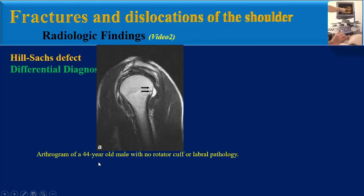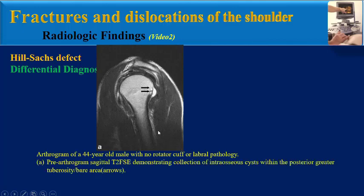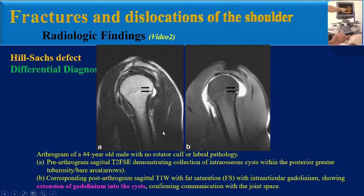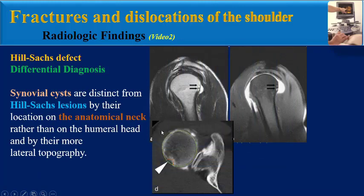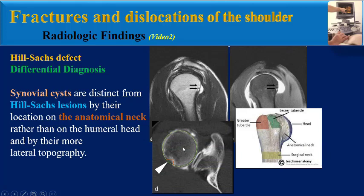In this arthrogram of a 44-year-old male with no rotator cuff or labral pathology, this pre-arthrogram sagittal T2 demonstrates a collection of intraosseous cysts within the posterior greater tuberosity or bare area. The corresponding post-arthrogram sagittal T1 with fat saturation and intra-articular gadolinium shows extension of gadolinium into the cyst, confirming communication with the joint space. Synovial cysts are distinct from Heel Socks lesions by their location on the anatomical neck rather than on the humeral head and by their more lateral topography.